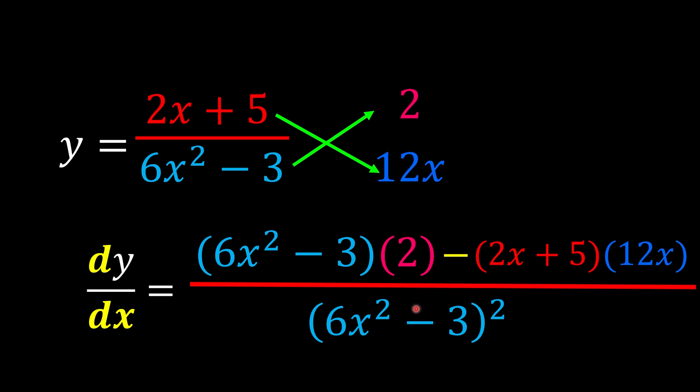6x squared times 2, we know we're going to have 12x squared. Negative 3 times 2, we know it's going to be negative 6.